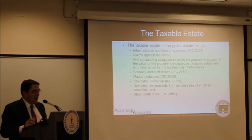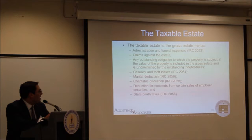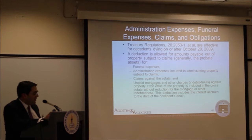When computing the taxable estate for estate tax purposes, it's the gross estate minus various administrative expenses. First, administration and funeral expenses. Second, claims against the estate. Third, any outstanding obligations to which property is subject if the value of property is included in the gross estate and is undiminished by the outstanding indebtedness. Also: casualty and theft losses, the marital deduction, charitable deductions, the deduction for proceeds from certain sales of employer securities, and state death taxes. Let's run through the more important ones.